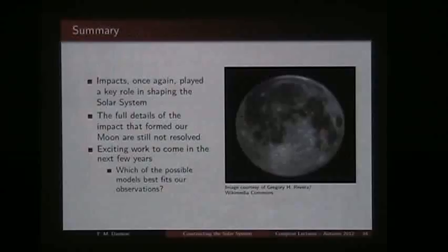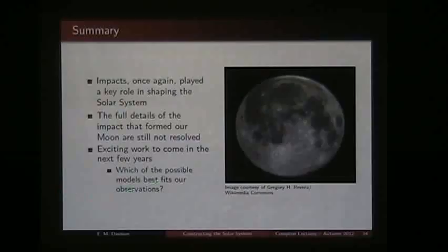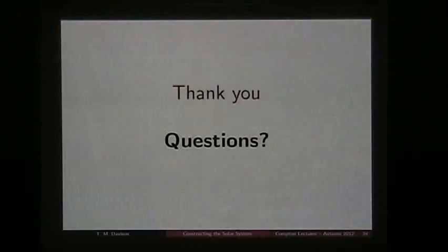In summary, impacts once again more than likely played a huge role in shaping our solar system. It's more than likely that an impact was the event that formed our moon. The full details of that impact are still not completely resolved — this is still work that people are doing right to this day. Over the next few years, as people interrogate these three different models, it's going to be a really exciting time to find out which of them best explains the formation of the moon. With that, I'll thank you and invite any questions.